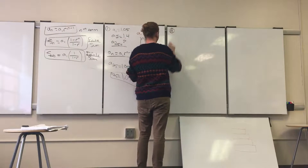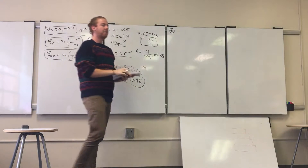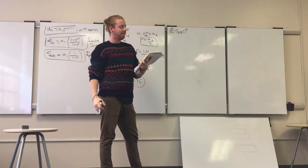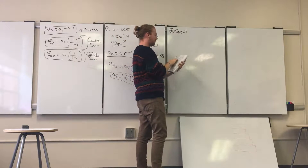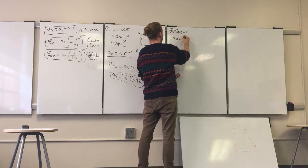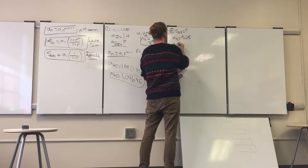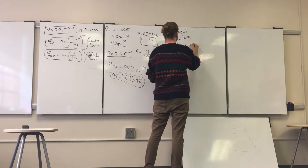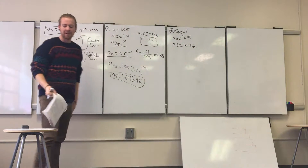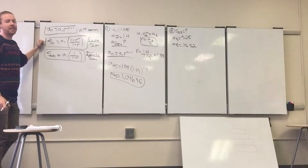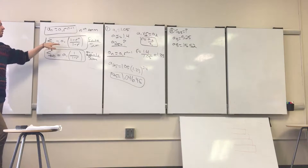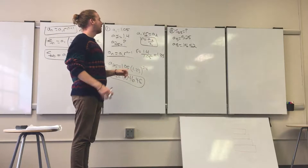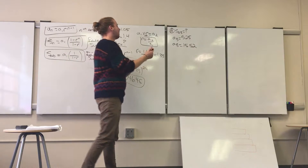Moving on to the next problem — this one's a little trickier. It asks us to find the sum over 23 terms, S_sub_23. It tells us that the third term A_sub_3 is 5.25 and the eighth term A_sub_8 is 15.52. That's all the information we're given — we have the third and eighth terms. To use the finite sum equation, we need the first term and r, and we don't have either yet. So first we'll try to find r.